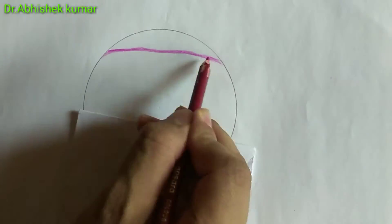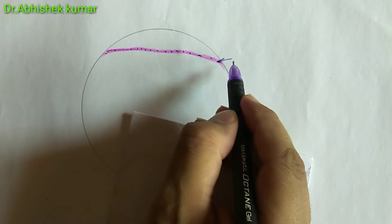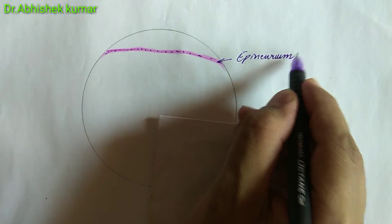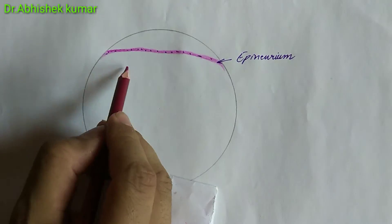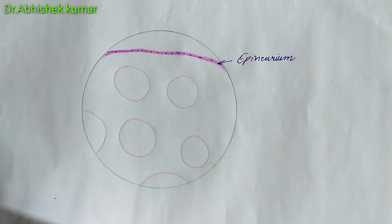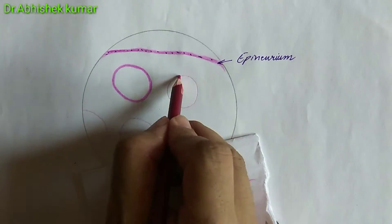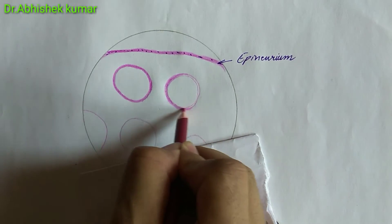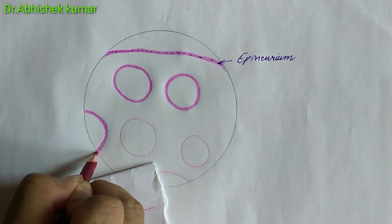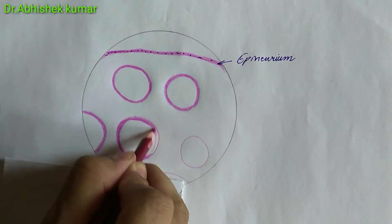The structure we are labeling here is called the epineurium. The outermost connective tissue layer is the strong fibrous layer called epineurium, which binds all the fascicles together. It consists of dense irregular connective tissue that completely surrounds the peripheral nerve.